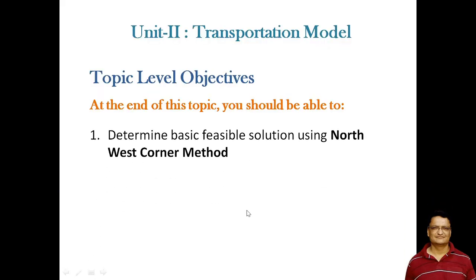The learning objective of this topic is to determine the feasible solution using the Northwest Corner method. The feasible solution is the solution which satisfies all the supply and demand constraints, and which may be feasible, optimum, or may not be optimum. Now we are going to use the Northwest Corner method.